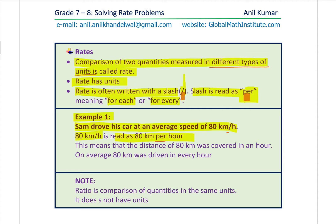What does that mean? It means that the distance of 80 kilometers was completed in an hour. So 80 kilometers per hour means that a distance of 80 kilometers on average was covered in an hour. The word 'on average' is also very important — on average, 80 kilometers was driven every hour. So in two hours: 2 times 80 is 160. Three hours: 3 times. In half an hour: half of 80.